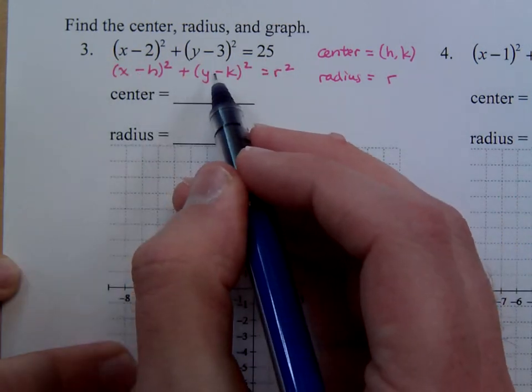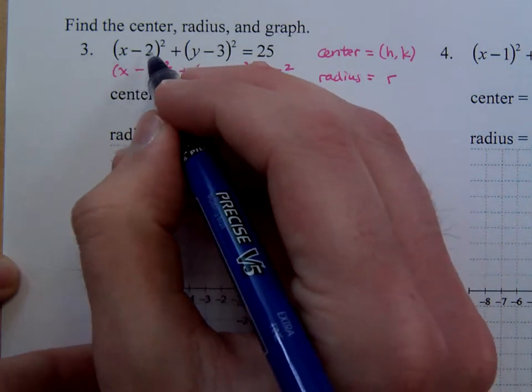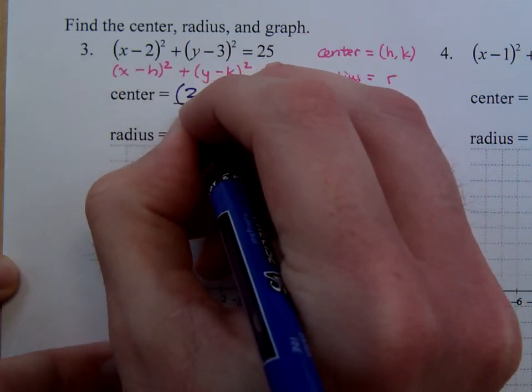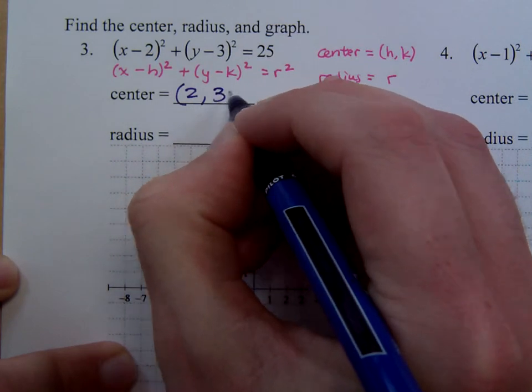When you see the minuses here, that tells you you're going to do the opposite of what you see. So I see a negative 2, so my x-coordinate is positive 2. I see a negative 3, so the opposite is a positive 3.